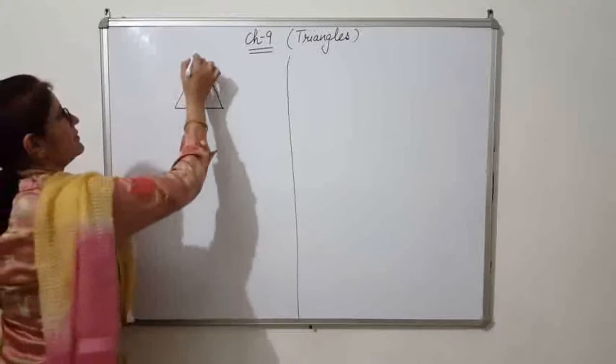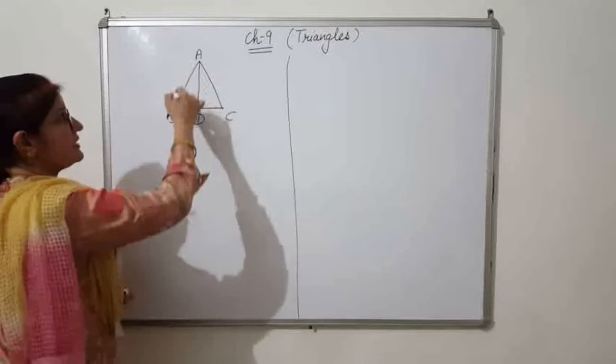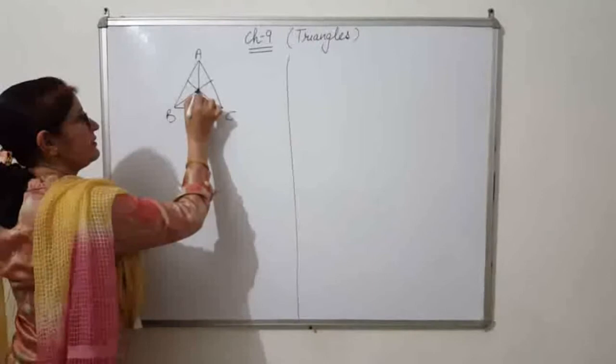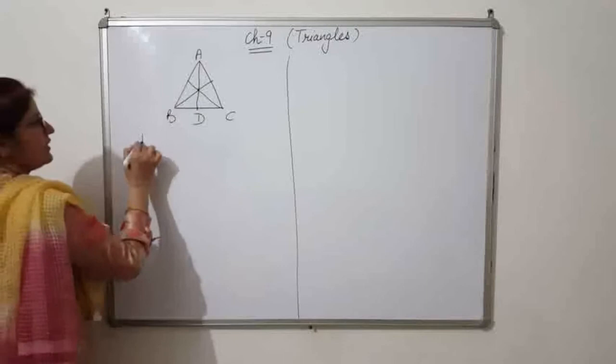So in triangle ABC, BD is the median. In a triangle there are three medians and all three pass through the same point — that's why they are concurrent. This common point is known as the centroid.